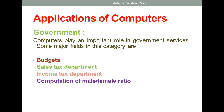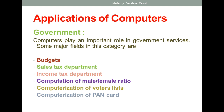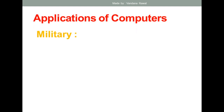Computers are also used for computation of male and female ratios, for computerization of the voter list, and for making voter ID cards. Computerization of PAN cards is also done with the help of computers. Nowadays all things are digitized and completed with the help of computers. The weather forecasting department also uses computers, meaning computers are used in almost all government and private sector departments.